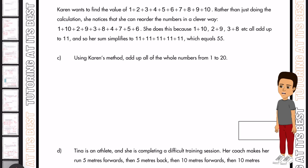Part C. Karen wants to find the value of these numbers added together. Rather than just doing the calculation, she notices that she can reorder the numbers in a clever way. And she does this because 1 plus 10, 2 plus 9, 3 plus 8, all add up to 11. So her sum simplifies to 11 plus 11, and so on, which equals 55.